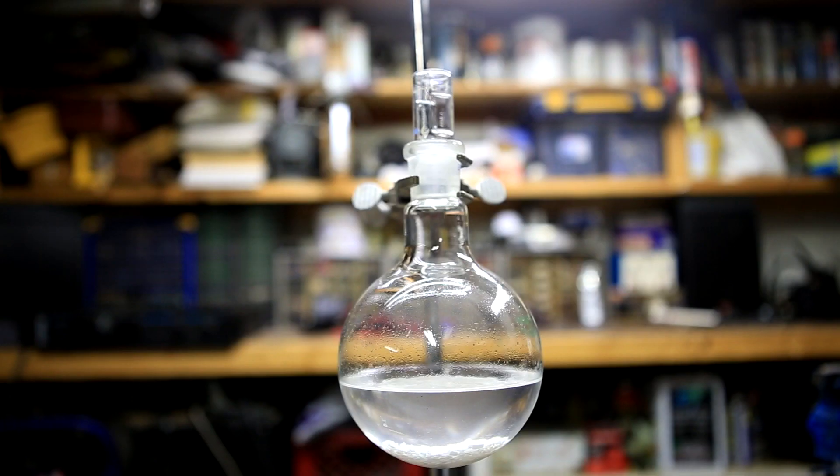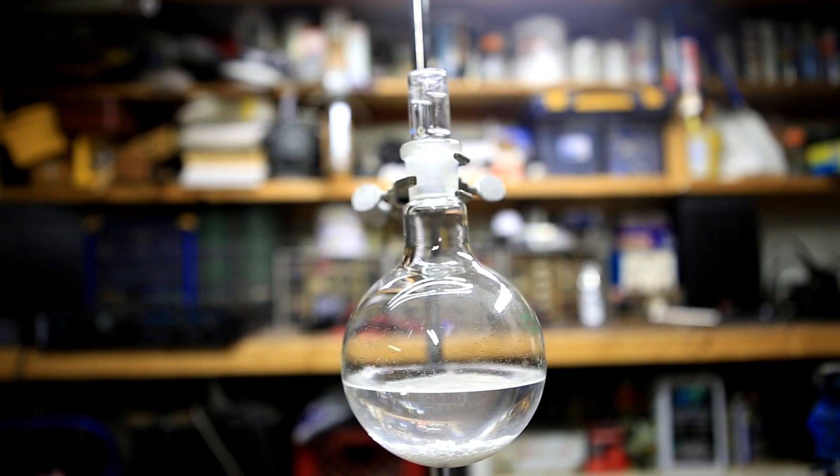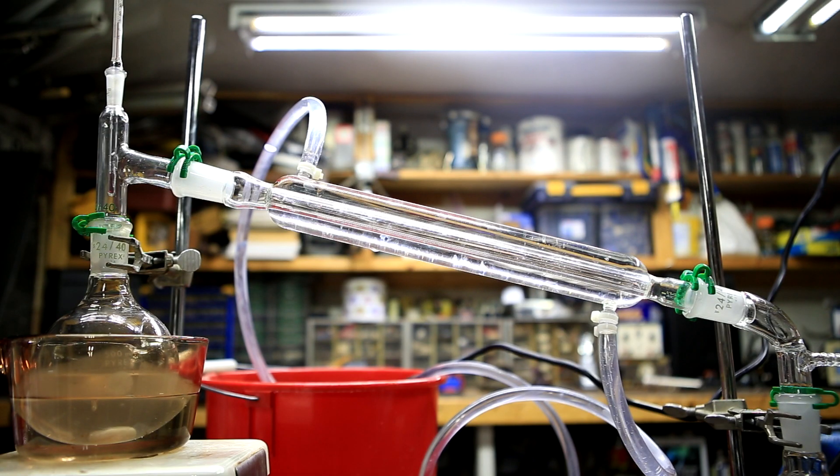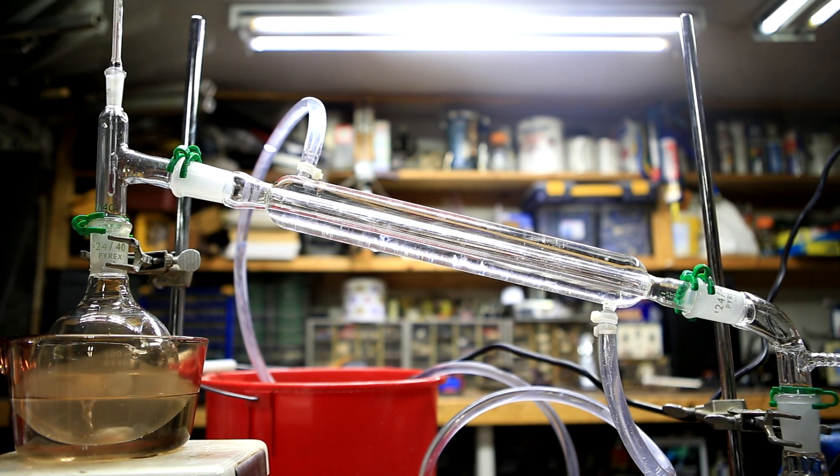The DCM from both 130 ml batches is transferred to a 500 ml round bottom. A copious amount of calcium chloride is added to remove any remaining water or methanol from the solution. The DCM was transferred to another round bottom flask and prepared for a simple distillation.